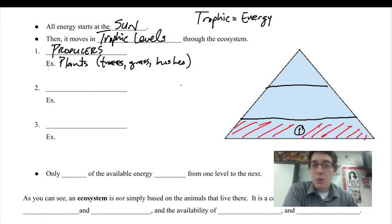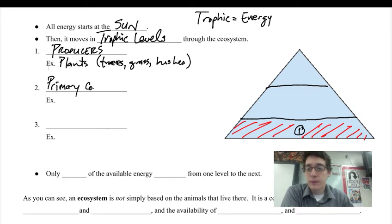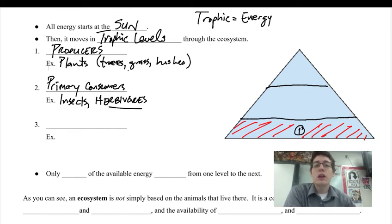There are way more producers in any ecosystem than there are of the next level, which are the primary consumers. Primary consumers. And so primary consumers, these are things like insects, very small, or herbivores. Herbivores are animals or organisms that eat only plants.